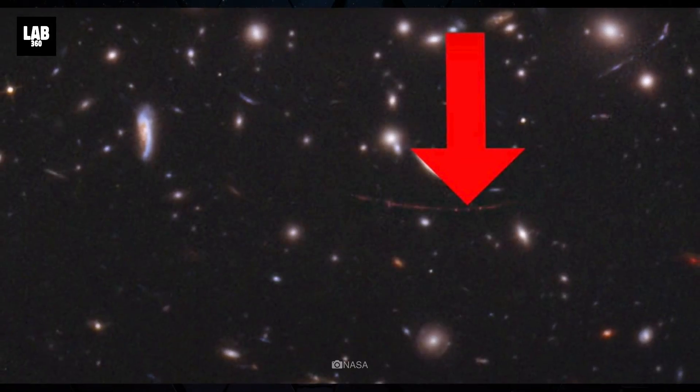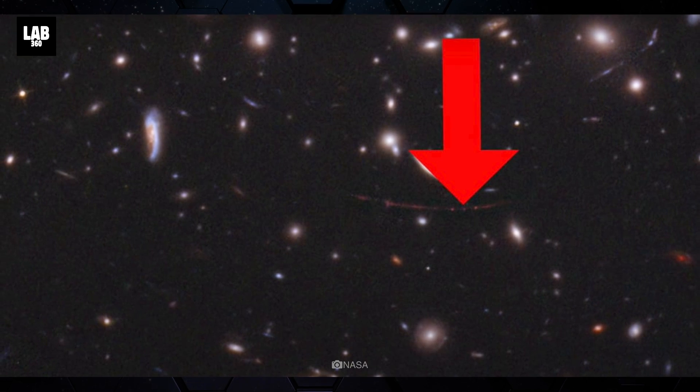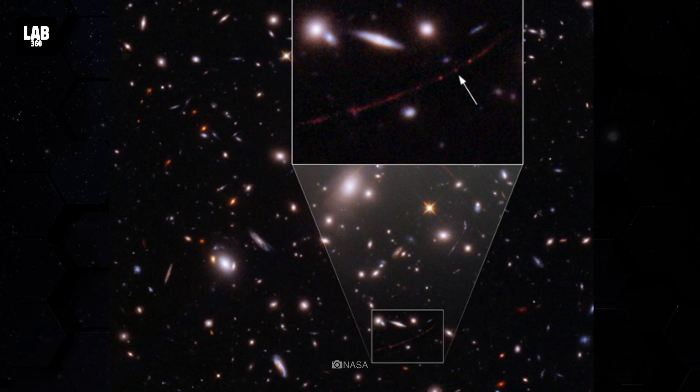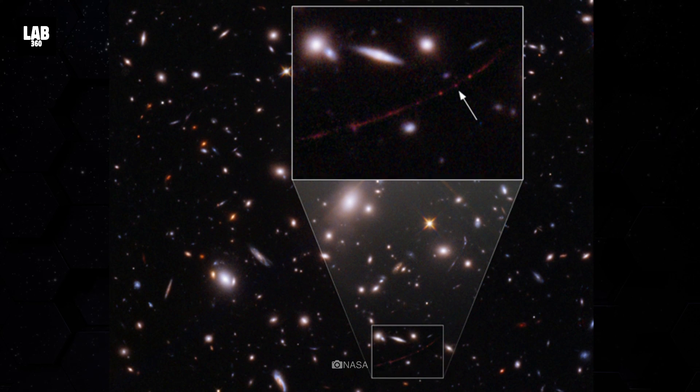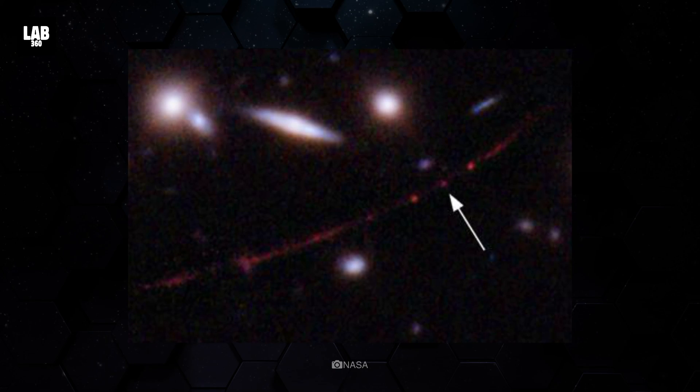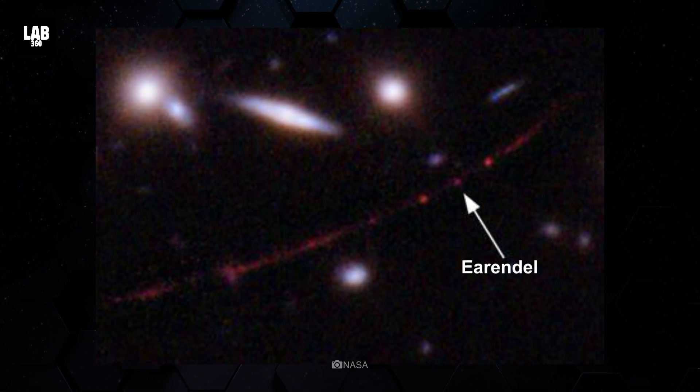The James Webb Space Telescope has caught a glimpse of the most distant star known in the universe, which had been announced by scientists using Webb's predecessor the Hubble Space Telescope only a few months ago. The star is named Erundel.